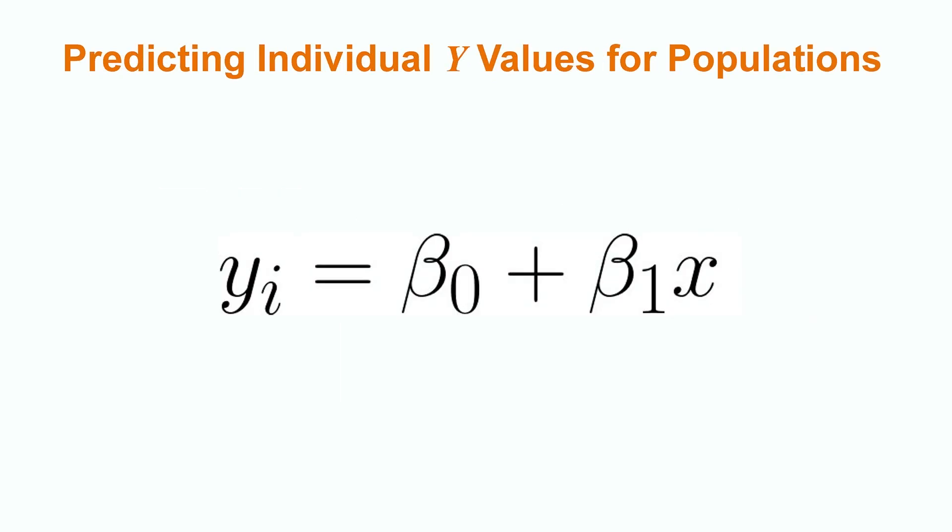By contrast to the regression line for population, if we wanted to predict an individual y value, we would use the formula y sub i equals beta sub 0 plus beta sub 1 times x.